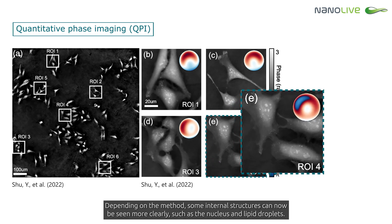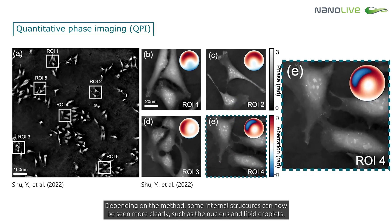Depending on the method, some internal structures can now be seen more clearly, such as the nucleus and lipid droplets.